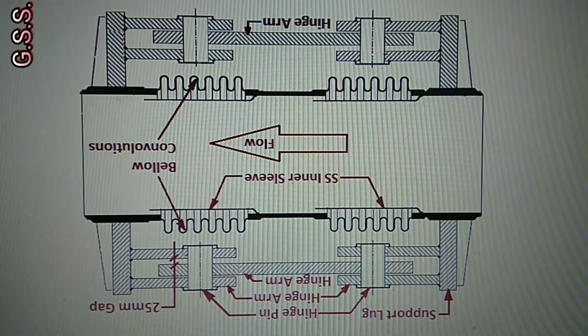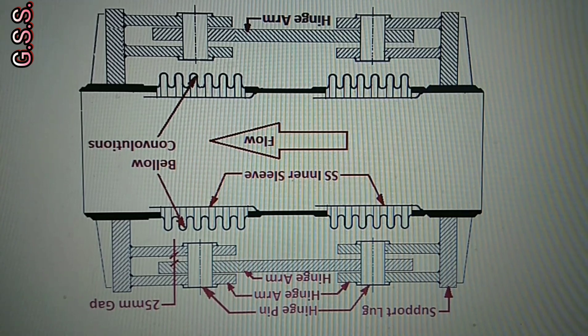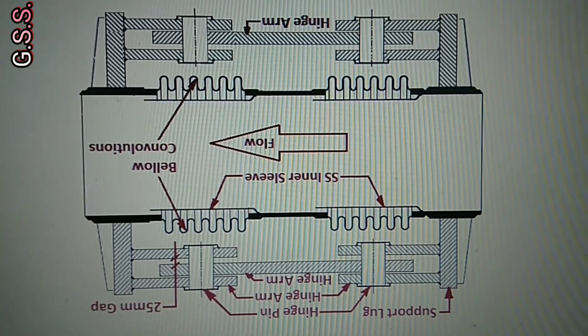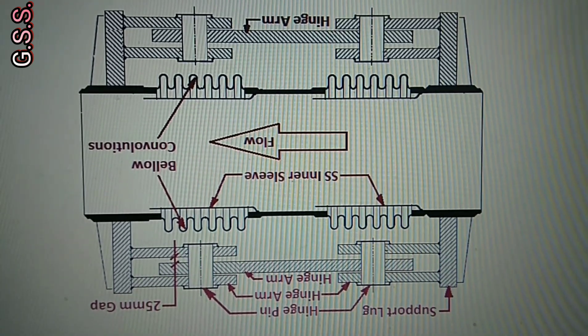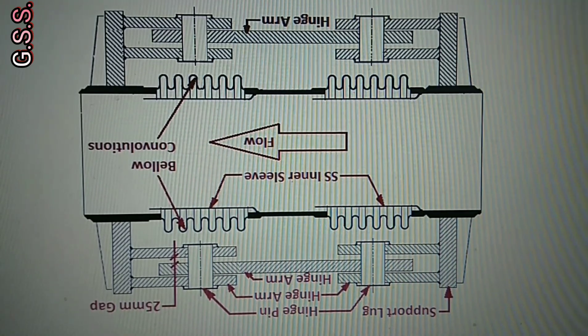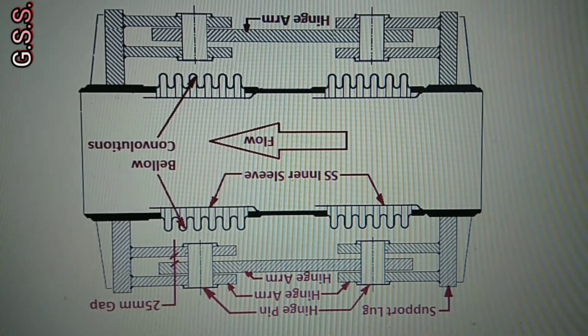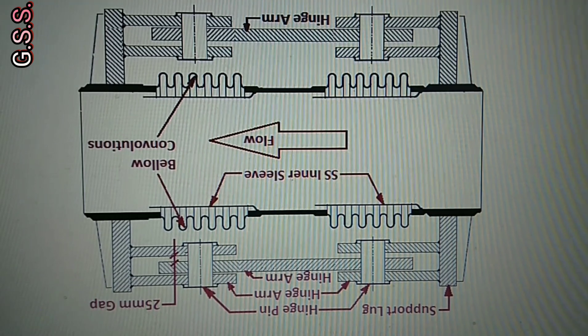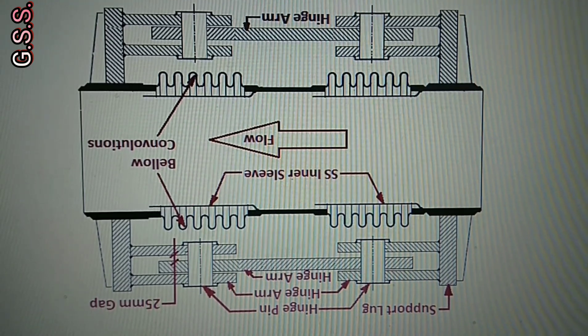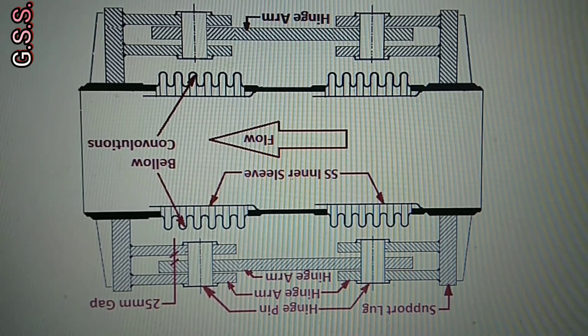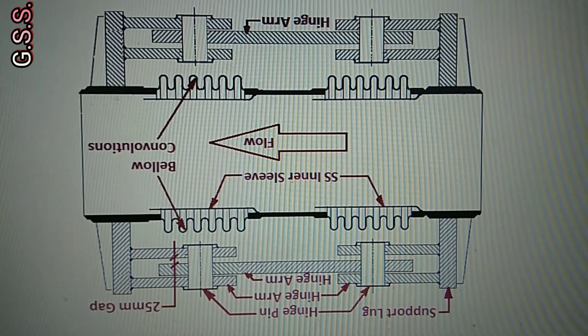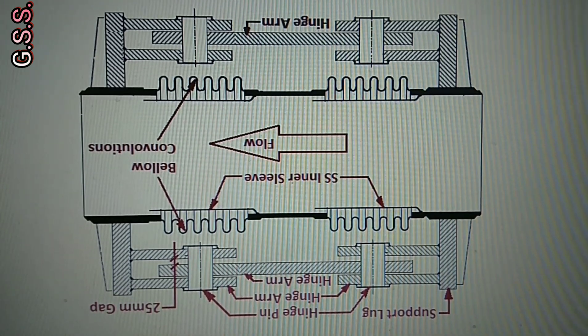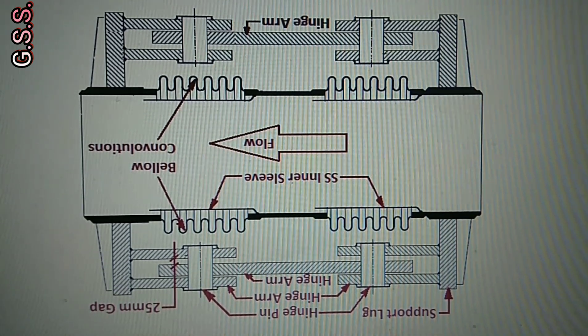This hinge arrangement allows the bellows to take lateral movement only and hinge arrangement is very strong which takes the axial pressure thrust due to internal pressure. There is no chance of expansion of the bellows axially. Hence, there is no chance of transmitting axial pressure thrust to the piping system or to the equipment.